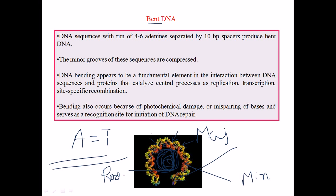Bending also occurs because of photochemical damage or mispairing of bases, and it serves as a recognition site for DNA repair. When mutations such as photochemical damage occur inside DNA, the DNA bends its structure in response to cope with that damage. However, in normal situations, DNA is most commonly found bent by wrapping around proteins.